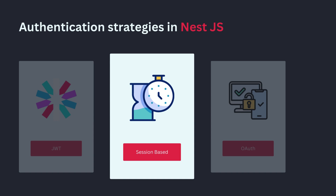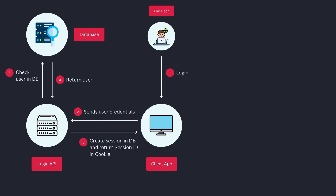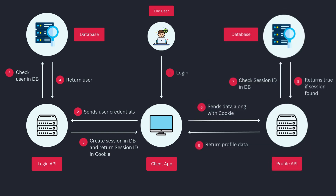With session-based authentication, the server maintains a session for each logged-in user. It sends a session ID to the client, typically stored in a cookie, and uses this session ID to identify the user for every request. The user sends their credentials, the server verifies them and creates a session in memory or a database, and a session ID is stored in a cookie and sent to the client. For every protected request, the client sends this session ID, and the server checks the session store or database to validate the user. If all is good, a response is sent.